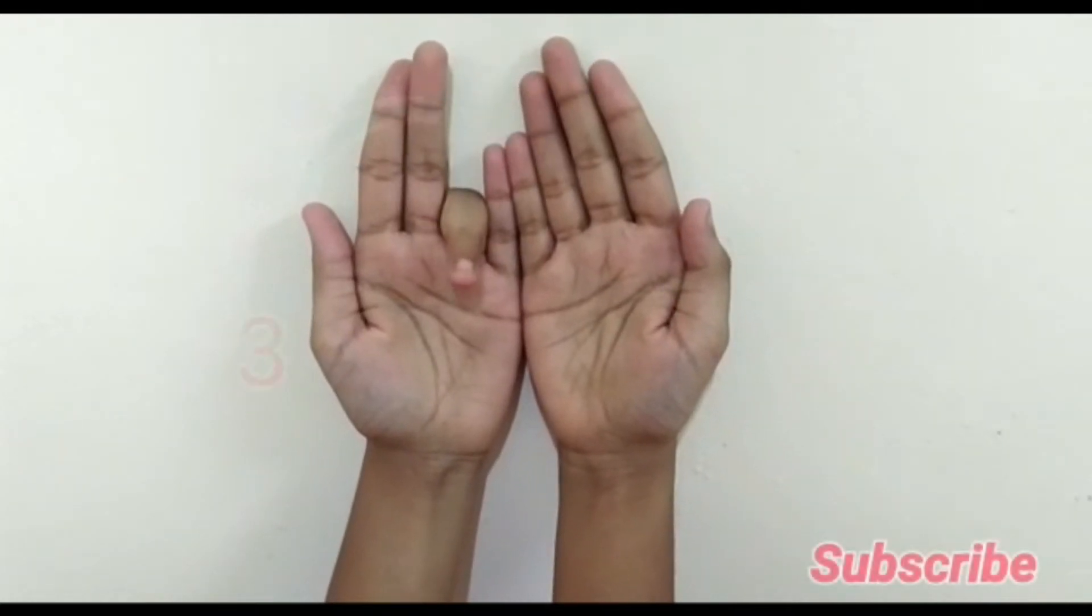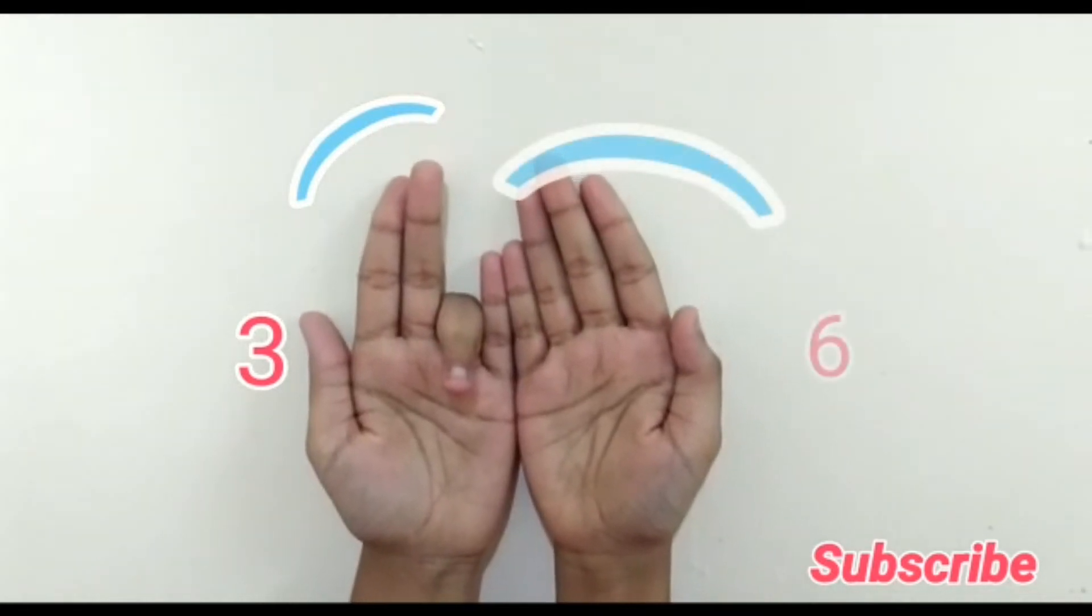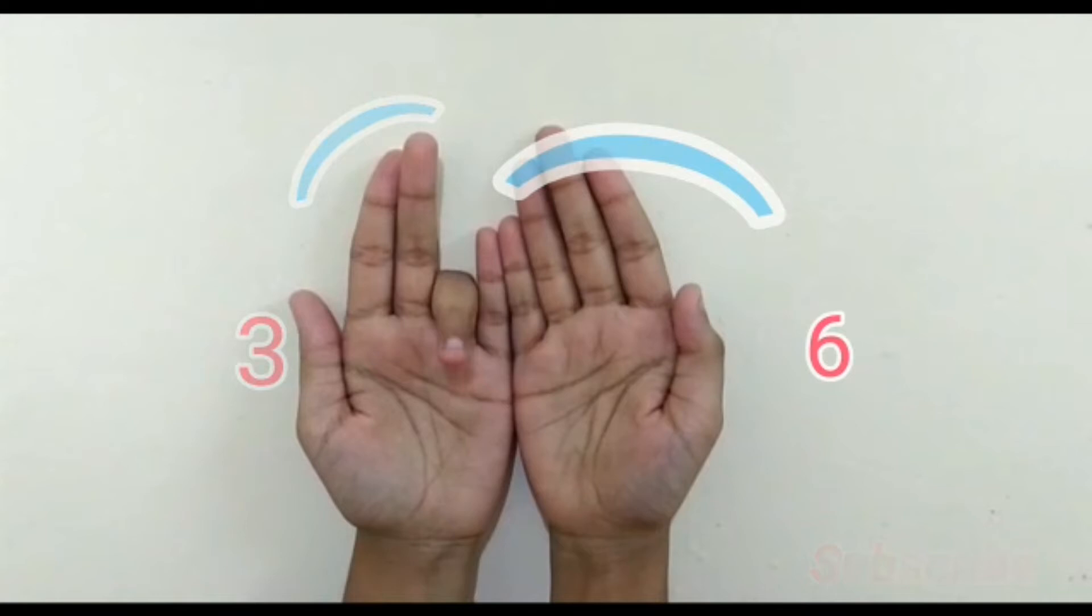4 into 9. So fold your fourth finger. Towards the left side of it it's 3 and towards the right side it's 6. So 4 times 9 are 36.